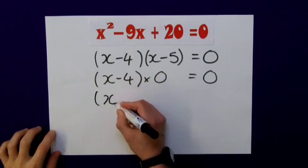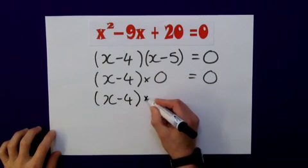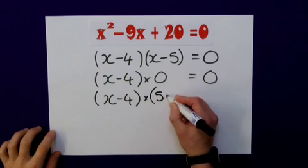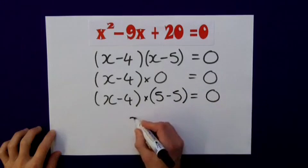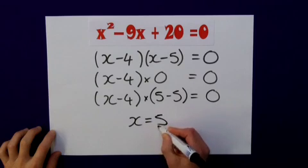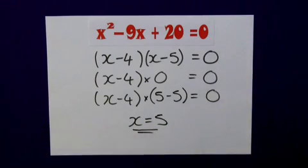So just to write that down again, x minus 4 is my original bracket multiplied by 5 minus the 5 equals zero. So in this case, x is equal to 5. And that's my second value for this equation.